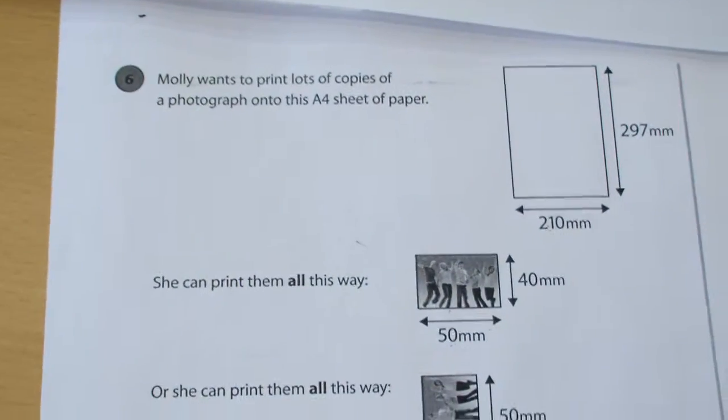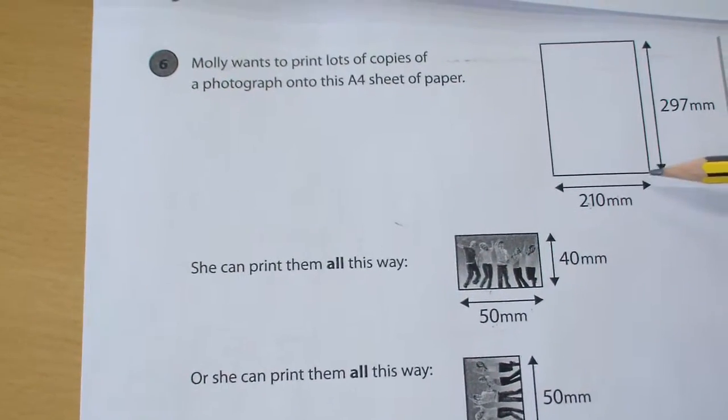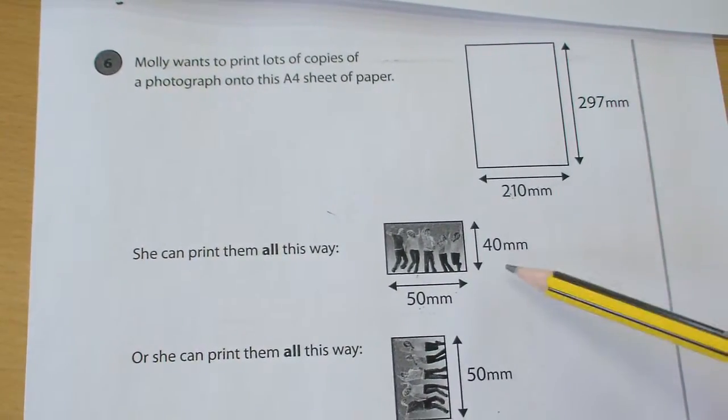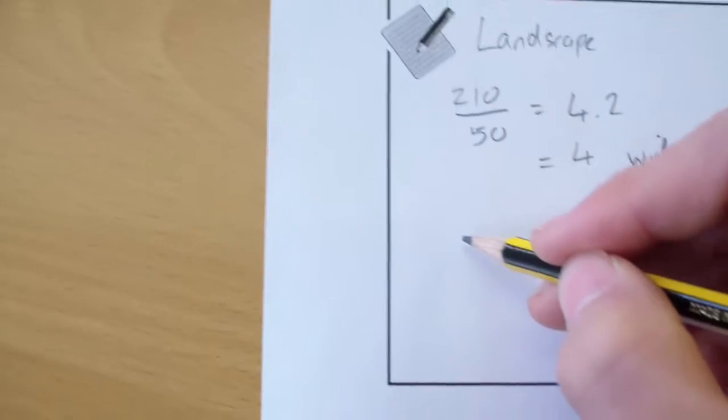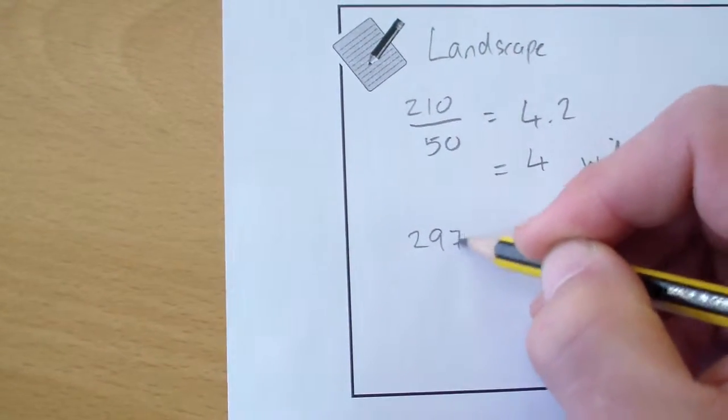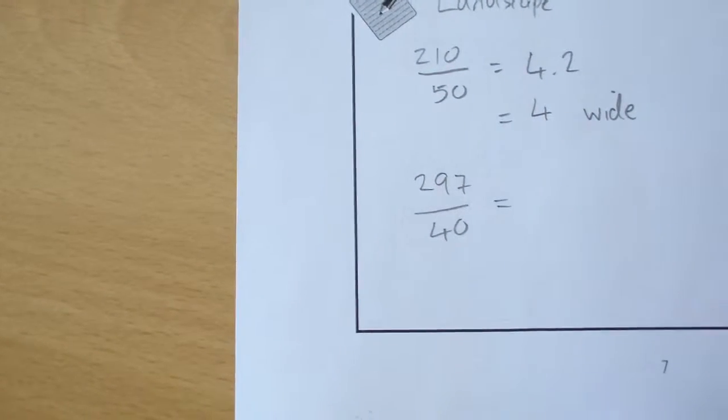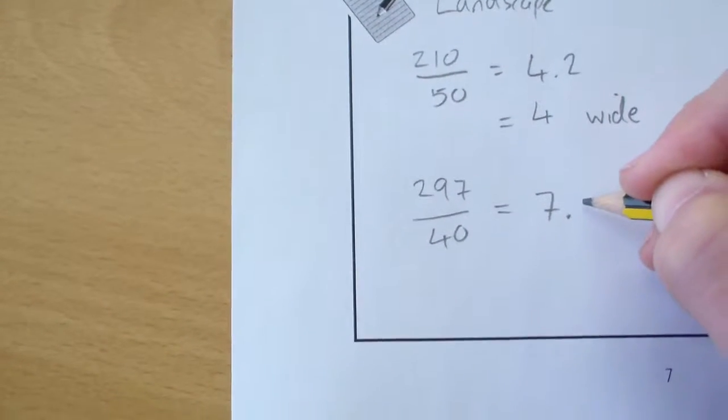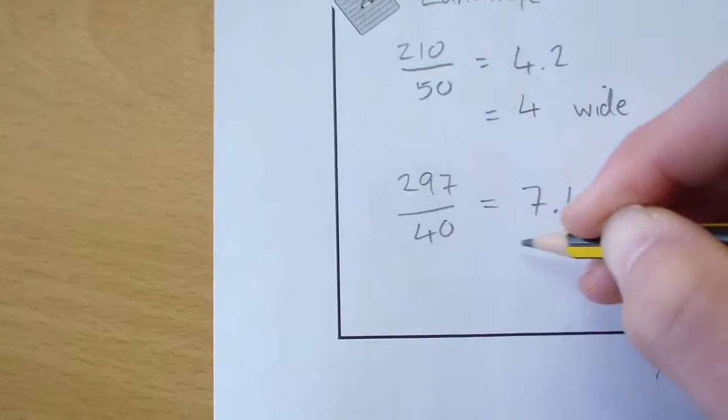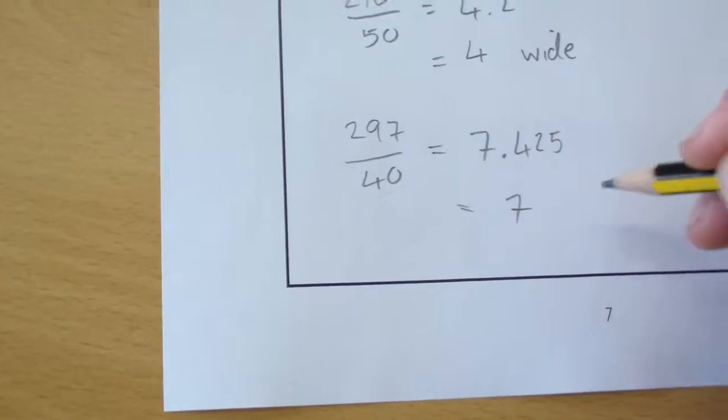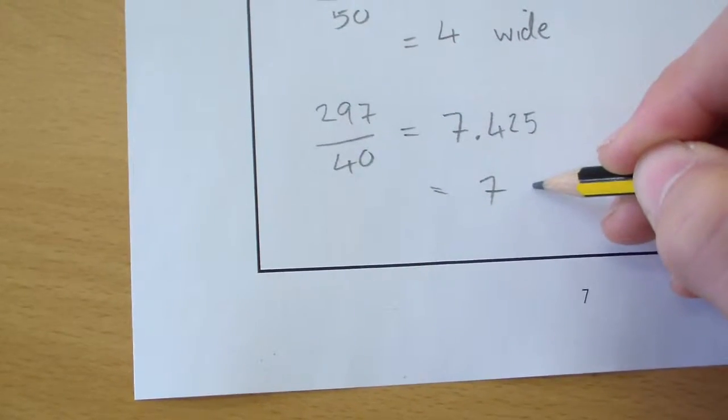And then if we move to figure out how many of these will fit up the side of the A4 page, we're going to do 297 divided by 40, which gives us an answer of 7.425. Again, we can only fit whole pictures on, so we're going to have 7 high or 7 up. Okay, that's if we've got landscape. Next thing to do is we place it portrait.